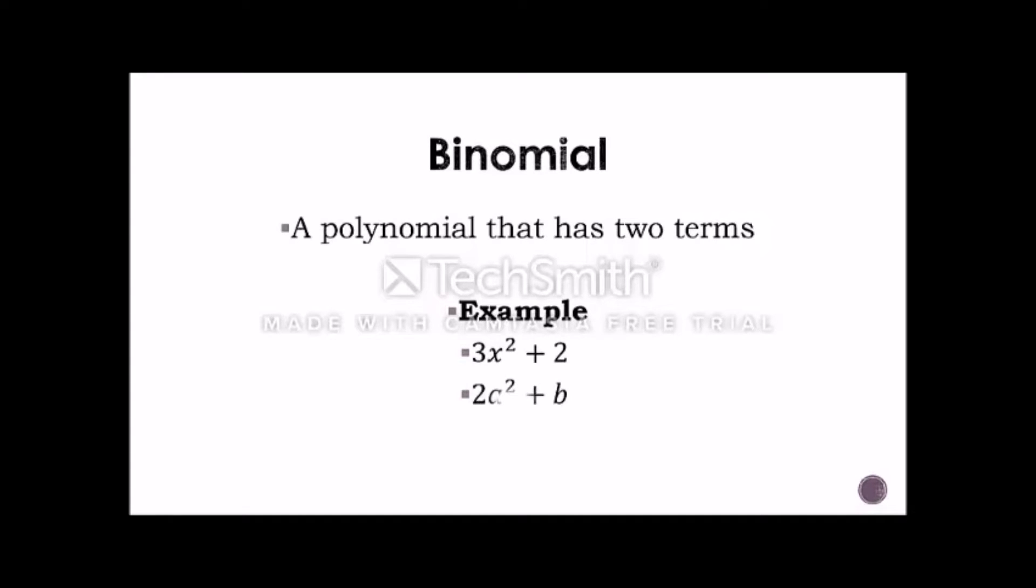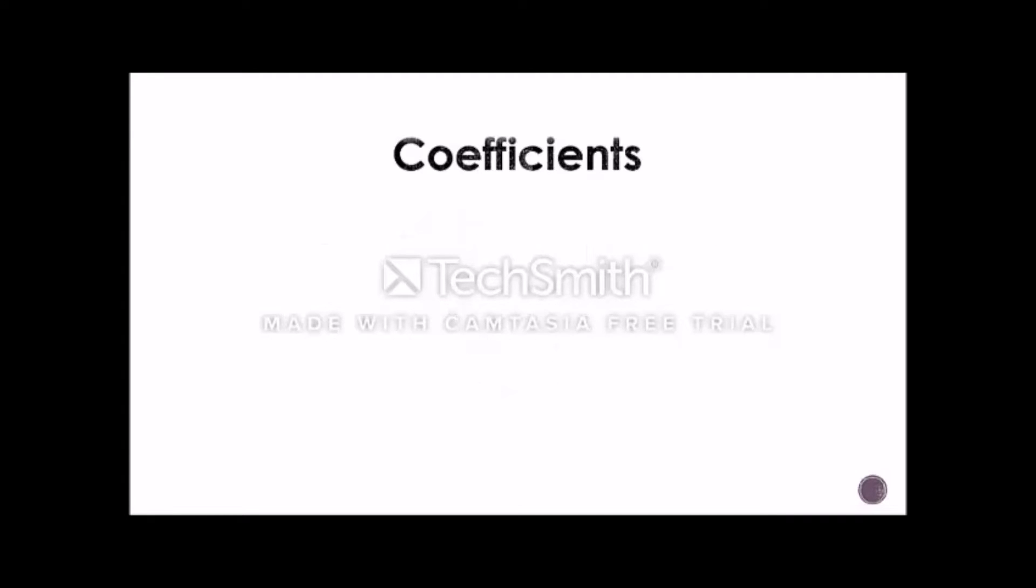The next term is coefficients. What is coefficients? Well, a coefficient is a number used to multiply a variable. Example, 3x squared plus 2y, where x squared and y are the variables and 3 and 2 are the coefficients.